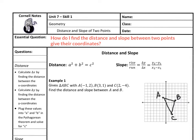Hey guys, Ms. Davis here. You're watching unit 7, skill 1: finding distance and slope of two points. Pause the video to write down your essential question: How do I find the distance and slope between two points given their coordinates?